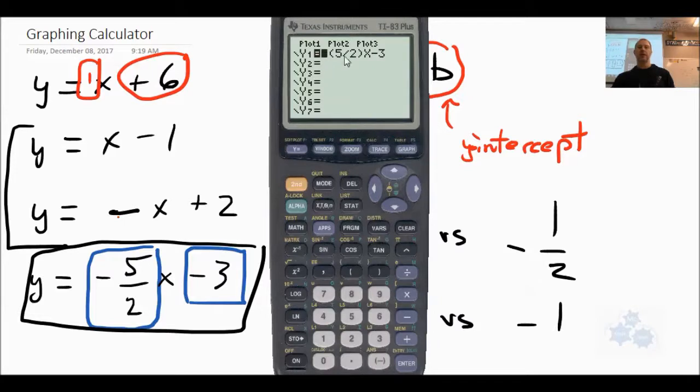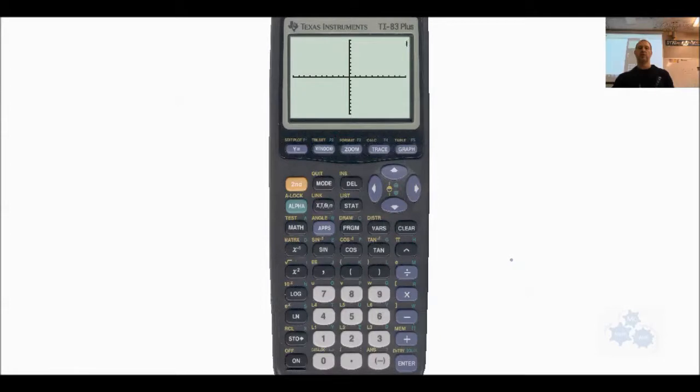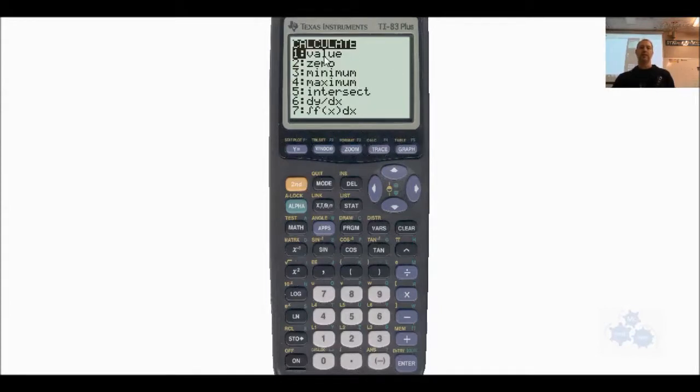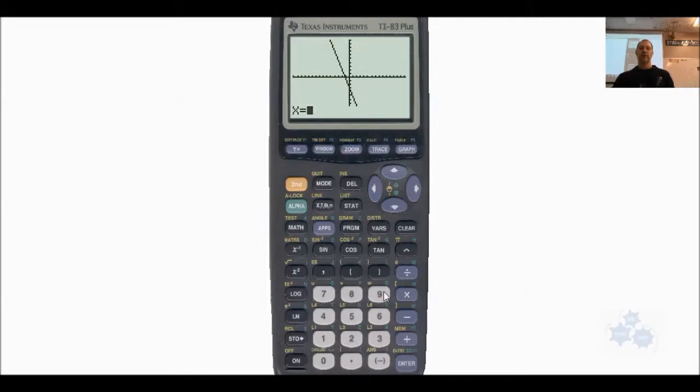Just a real quick review. Y equals gets you this screen. Type in your function. Graph. Zoom 6 gets you to a standard window. Zoom 5 gets you to a square window where all of them are separated evenly. That's kind of a nice way to look at things, actually. And, yeah. Type in values. Second function trace gives you value. You hit enter. And, you can type in any x value you want. Negative 2 here will give us a y value of positive 2. And, it shows you the equation in the top corner there. All right. Any questions? Thank you.